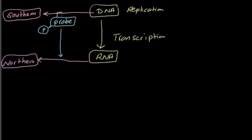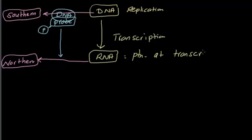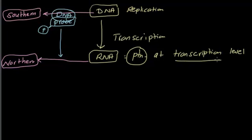So basically this probe is a DNA probe. You will use a DNA probe whether you want to see the DNA or whether you want to see the RNA. I'll just add two simple things here: probe and phosphate attached to it. Now, the same question — if you need to see a protein at the transcription level, in this case you will also go with RNA, meaning you will go with Northern blot. Don't go with Western. The question mentions protein, but at the transcription level, so you go with RNA, which is basically Northern blot.